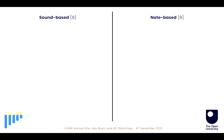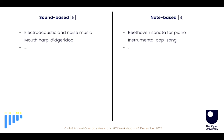The type of music or genre or sounds I'm interested in are the sound-based. And how can we define them compared to note-based music? In sound-based music, we can find electroacoustic and noise music, or music played on instruments like mouth harp and didgeridoo. While in note-based music, we can find sonatas for piano and instrumental pop songs.